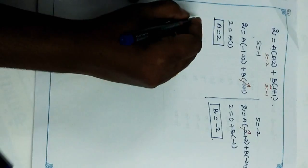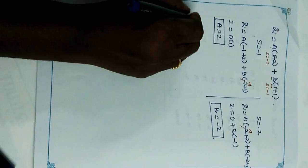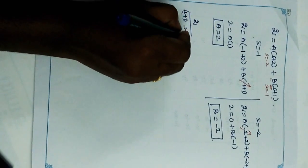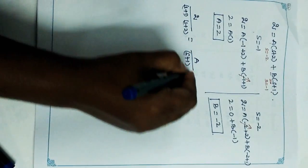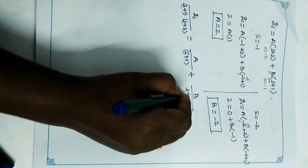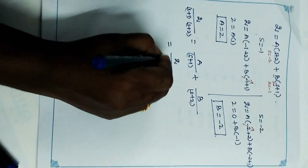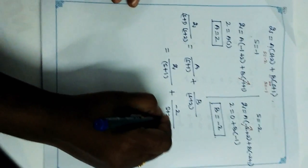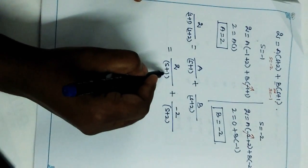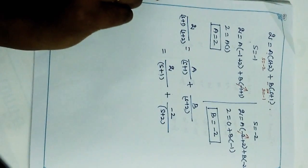Substituting A and B back into the partial fraction expression: H_a(s) = 2/(s+1) + (-2)/(s+2), that is 2/(s+1) minus 2/(s+2). This is now in the form 1/(s+p_i), so we can apply the impulse invariant method to convert to H(z).